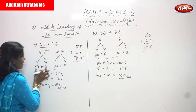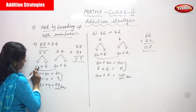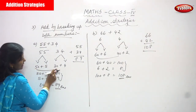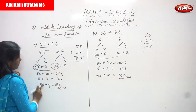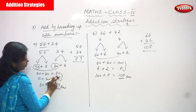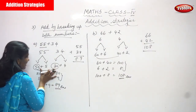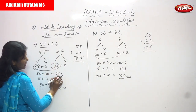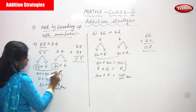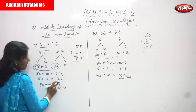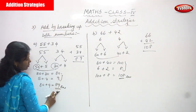Now we are going to add the tens: 50 plus 30 equals 80. Next, we add the ones: 5 plus 4 equals 9. Finally, we combine: 80 plus 9 equals 89.